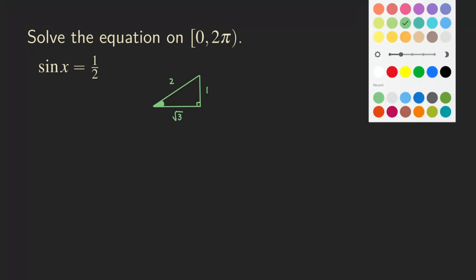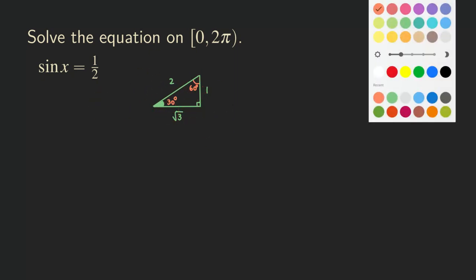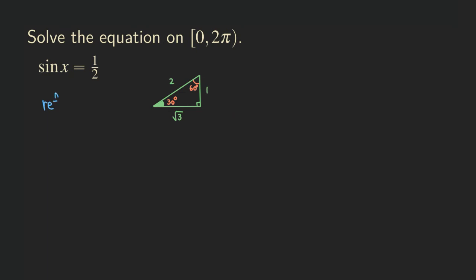The angle facing the side of length 1 is 30 degrees, and the angle facing the √3 side is 60 degrees. The angle facing the hypotenuse is 90 degrees. This triangle tells us our reference angle — the reference angle is 30 degrees.